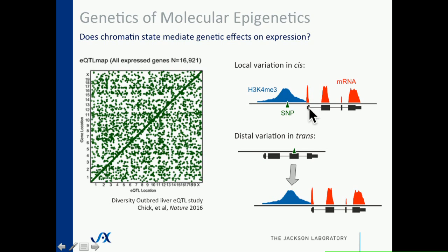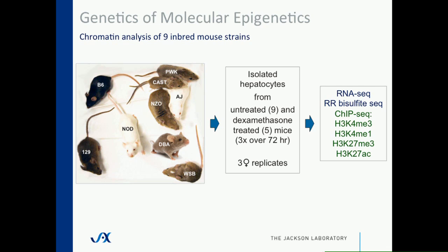We did an experiment as a pilot to look at the inbred lines to see how much genetic variation drives epigenetic variation. We did chromatin assays in isolated hepatocytes from nine inbred strains — those are the HCC founders and DBA. For a subset of five strains, we also treated with dexamethasone to give a strong perturbation to the liver. We did three female replicates of each strain, and for every hepatocyte pool we did RNA-seq, reduced representation bisulfite sequencing, and a suite of ChIP-seq histone modifications.